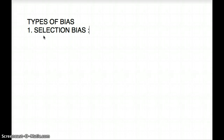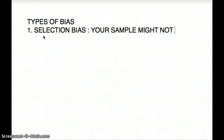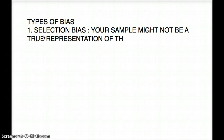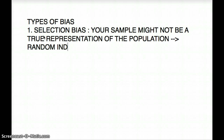The first one is selection bias. Selection bias is whenever you are taking a sample for your experiment and sometimes those samples might not be a true representation of the true population. Your sample might not be a true representation of the population. The solution is you should be taking random, independent samples.